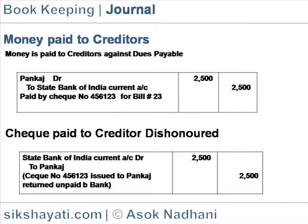Money is paid to creditors against dues payable. The creditor account whom the money is being paid is debited and the cash/bank account is credited by the amount paid. For example: Pankaj Java account debit 2500 to State Bank of India current account 2500, paid by cheque, for bill number such-and-such against amount payable.